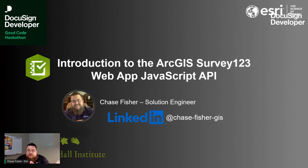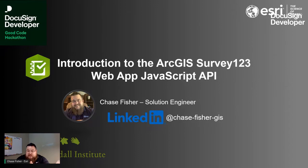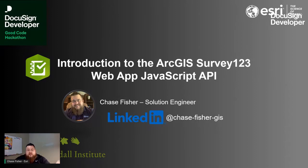Thank you, everybody. I'm Chase Fisher, solution engineer with local government at Esri. First off, I want to thank DocuSign and the Jane Goodall Institute for involving us in this Good Code hackathon. Today I'm going to introduce Survey123. We'll talk about the JavaScript API and app linking using URL parameters. Hopefully you have some familiarity with Survey123 and JavaScript, but if not, it's okay. We do have a lot of ground to cover. Some of you may have seen my colleague Jim Berry give a broad overview of our platform a few days ago — that link should still be in the Slack channel. We've got a short amount of time and a lot to cover, so let's drop right in.